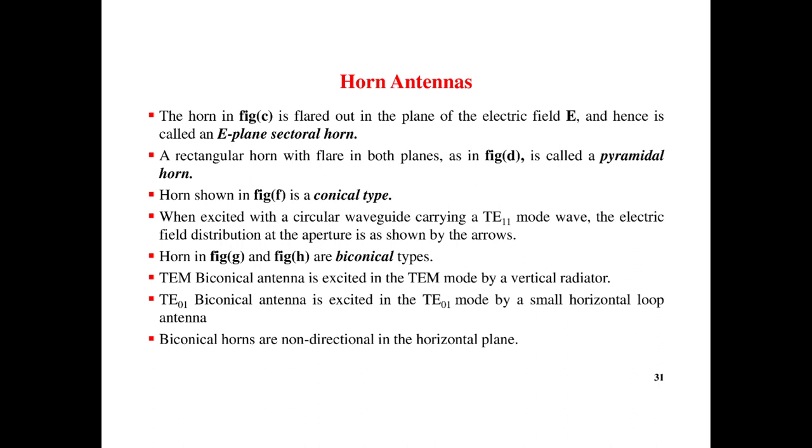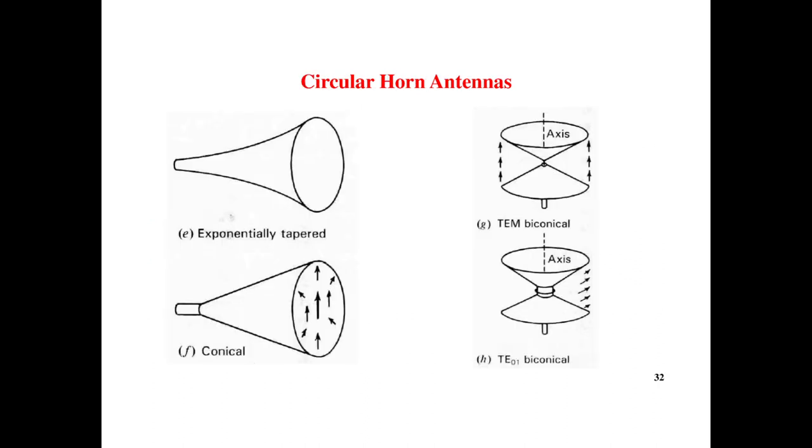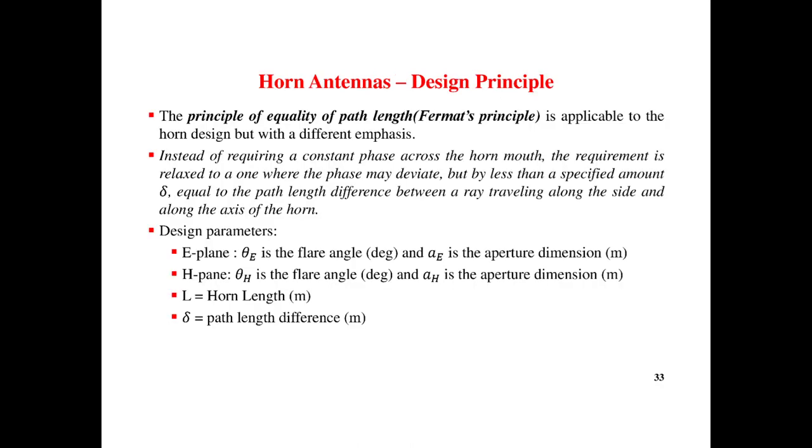When excited with the circular waveguide carrying TE11 wave, the electric field distribution aperture is given by arrows. TE1 biconical antenna is excited with TEM mode by a vertical radiator. TE10 biconical antenna is excited with T01 mode by a small horizontal loop. Biconical antennas are non-directive in the horizontal plane. Here we can see some types of circular horn antenna: exponential tapered, TEM biconical, conical.